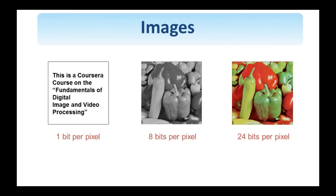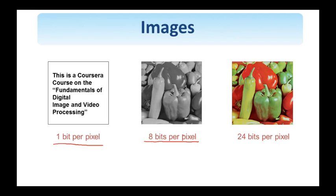Here are some examples of images. On the left you see a binary image — I only have two bits to represent the different colors, black and white. Binary text images like this one are used in fax encoding when transmitting from point A to point B. In the middle is an 8-bit per pixel image, while on the right is a 24-bit per pixel image — a true color image with 2^24, around 16 million different color values, to represent such an image.